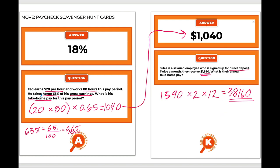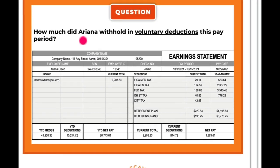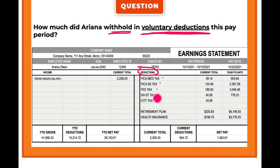You now have the answer $38,160 and you walk around until you find it on card C. Card C asks: how much did Ariana withhold? Withhold is the amount of money you are not receiving — it's held back for taxes and voluntary deductions such as retirement and health insurance. Looking at the pay stub, under deductions we have tax deductions (not voluntary) and below that retirement and health insurance, which are things you're choosing through your employer.